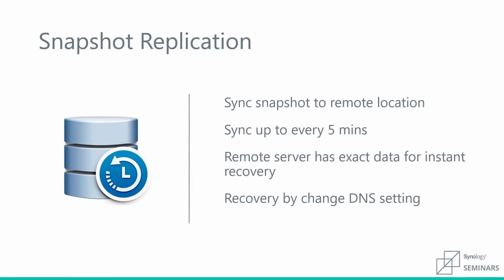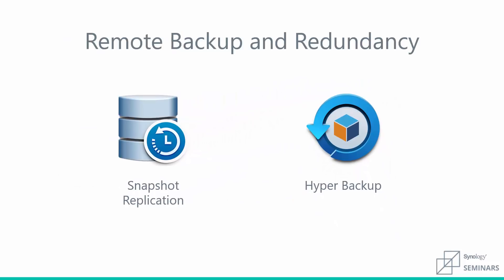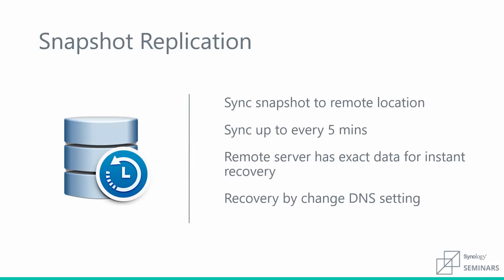Snapshot replication is a point-in-time backup software. It takes an exact snapshot of your data at certain increments during the day — whether once a day or every five minutes — giving you a restore point to roll back to. The most important thing to point out is that you're creating an exact copy of the data. If you have 10 terabytes at headquarters, you'll have 10 terabytes on your disaster recovery unit off-site. The advantage is that it's instantly accessible — if an emergency occurs, like a pipe burst destroying your server room, you can point your network at that off-site server and immediately bring your company back online.